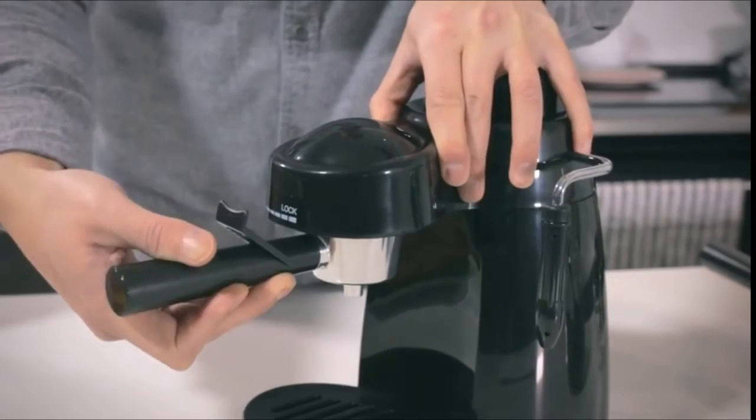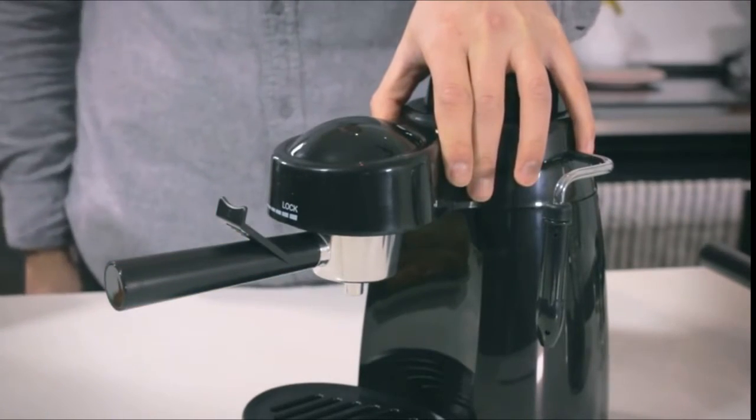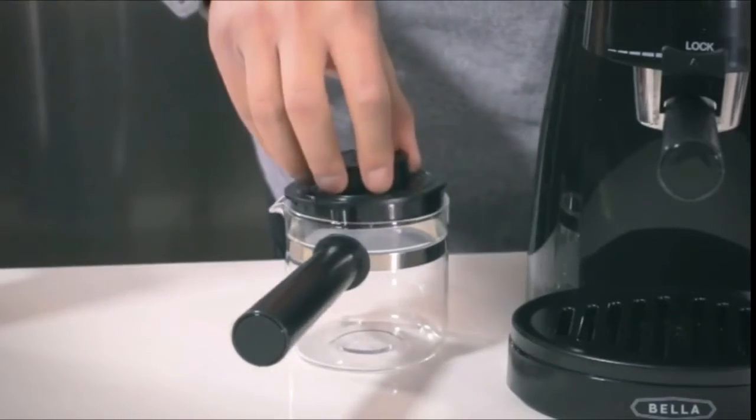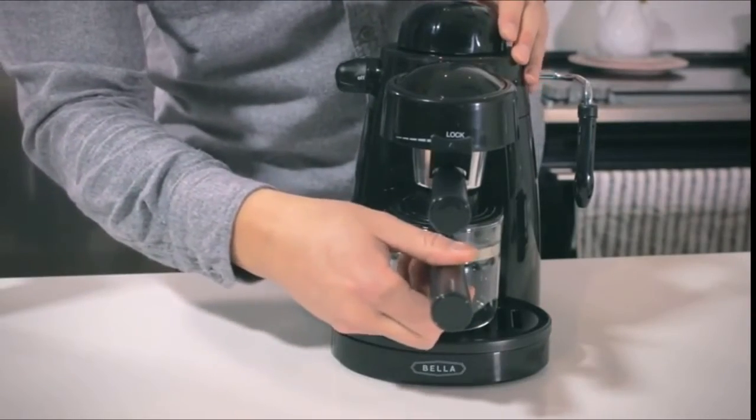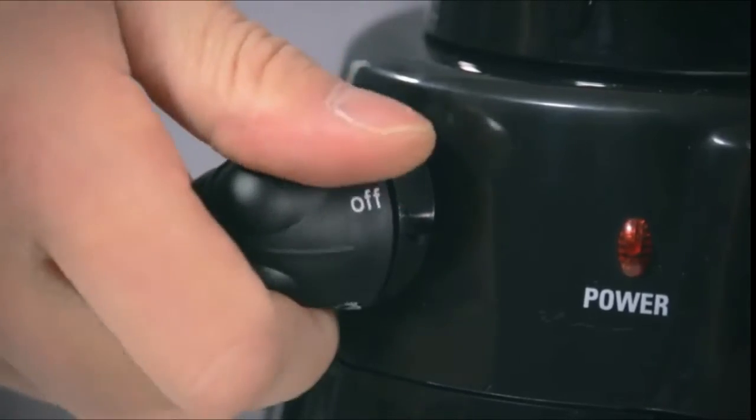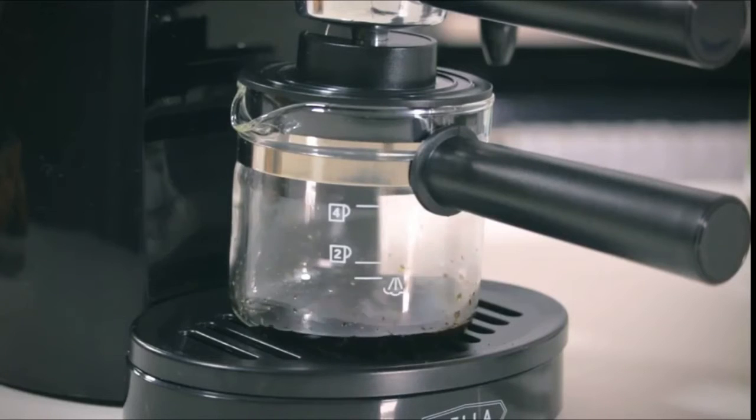Place the brew head and simply turn to lock into position. Place the cover on the carafe and align the lid under the nozzle. Turn the knob to espresso and it will take a few minutes to heat up and brew.